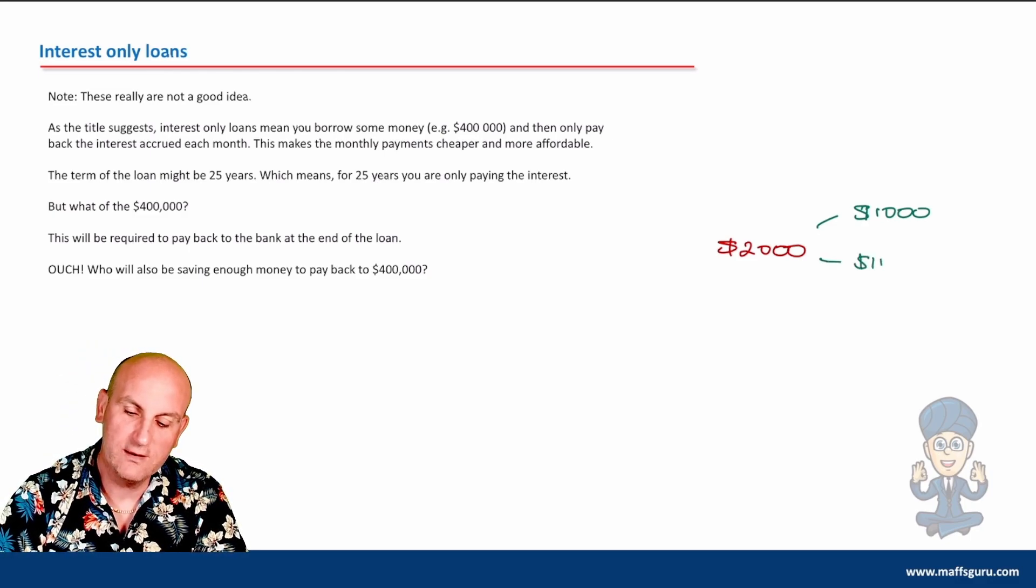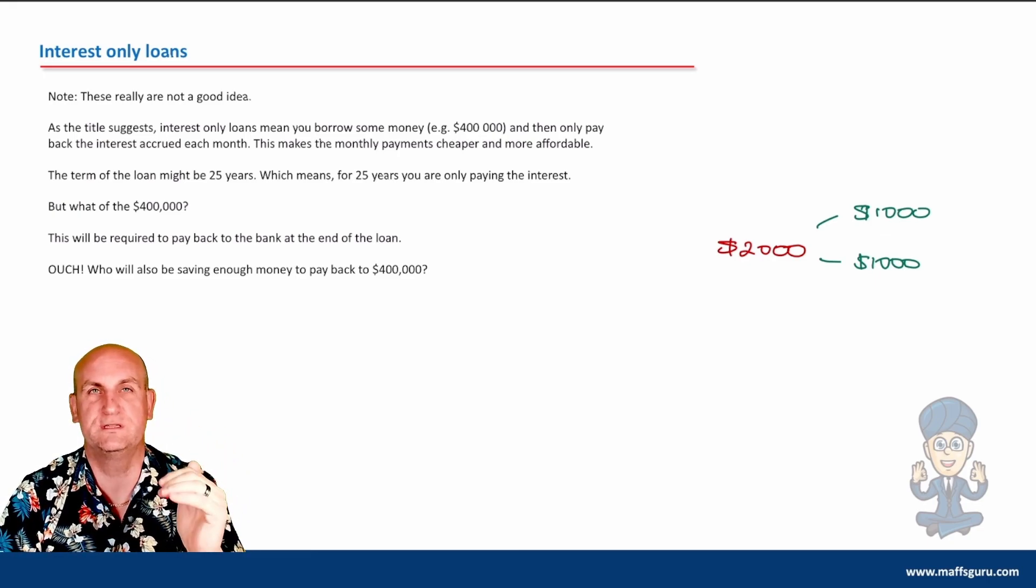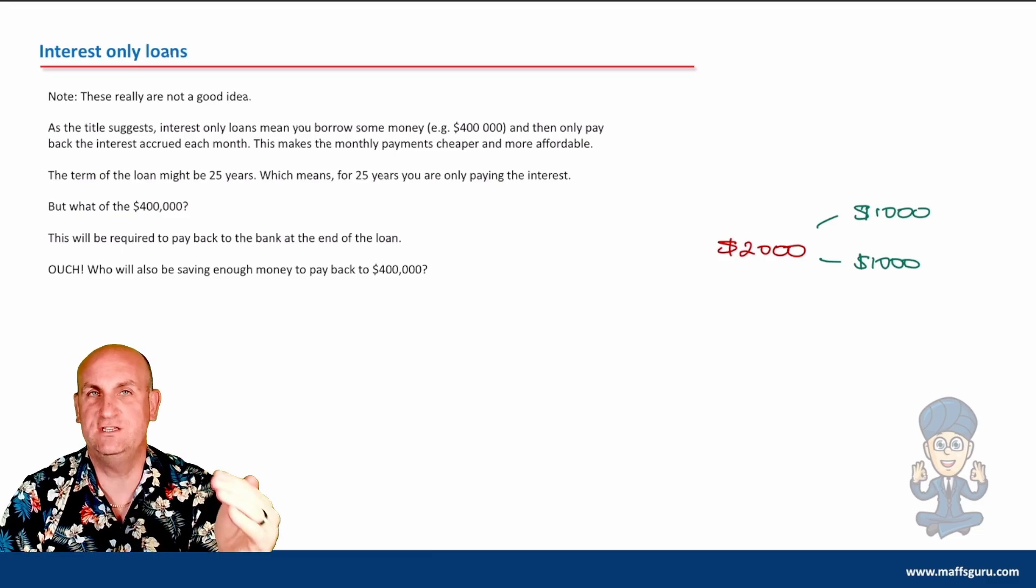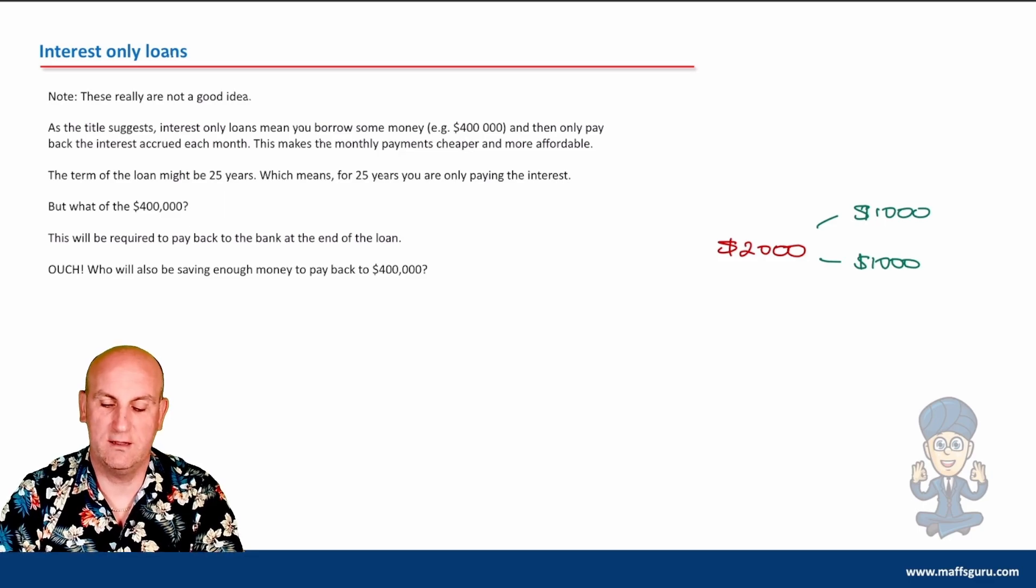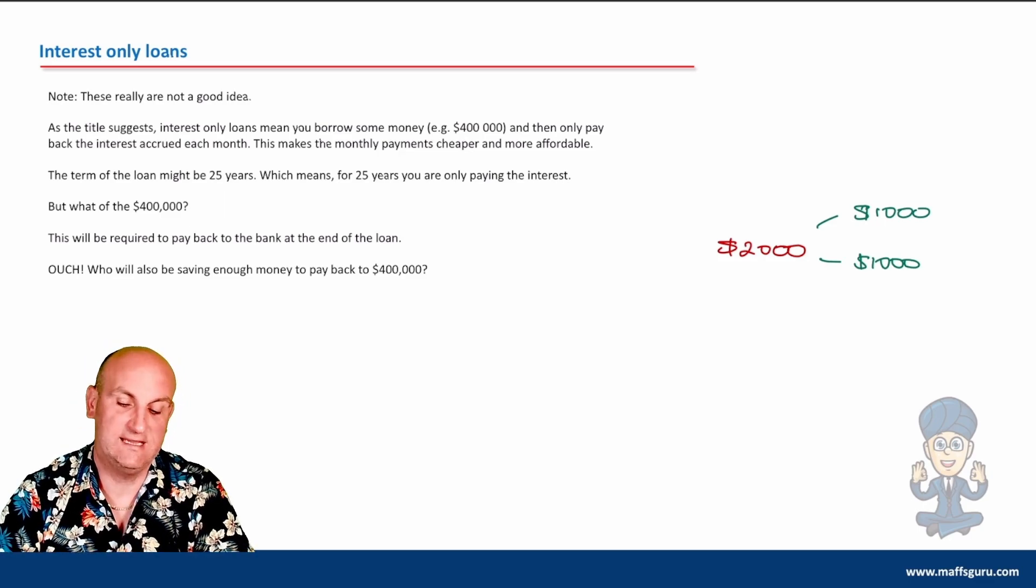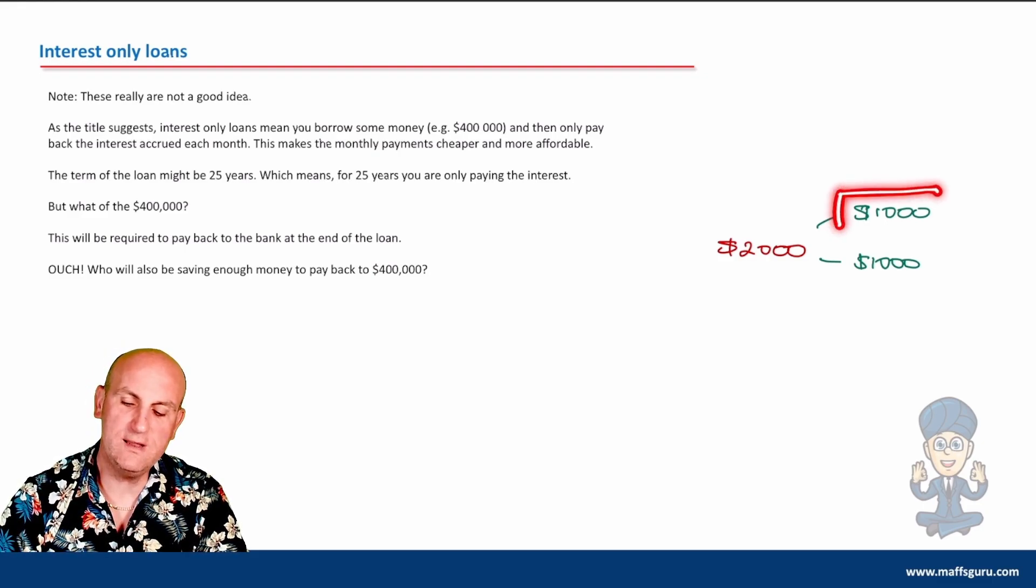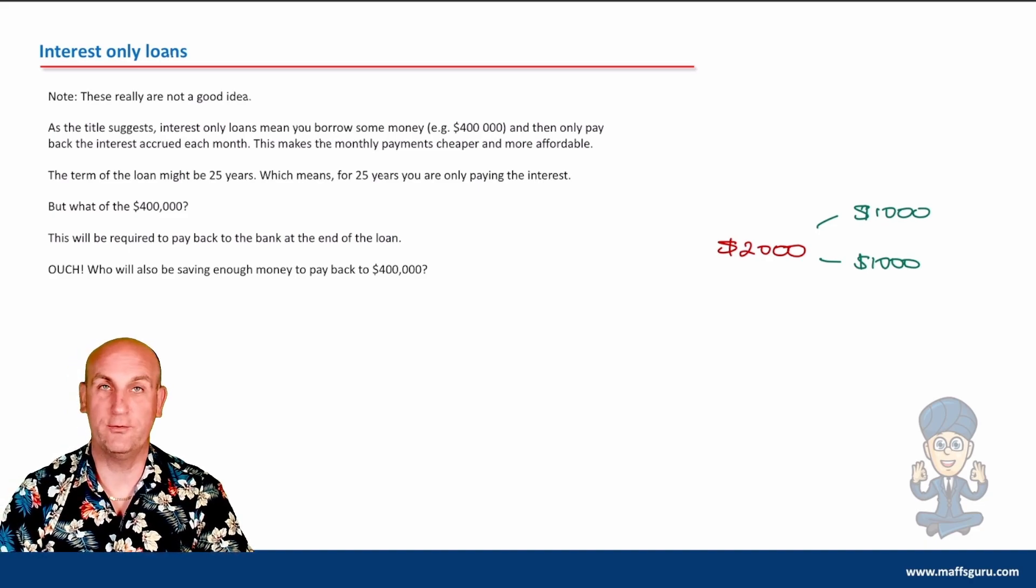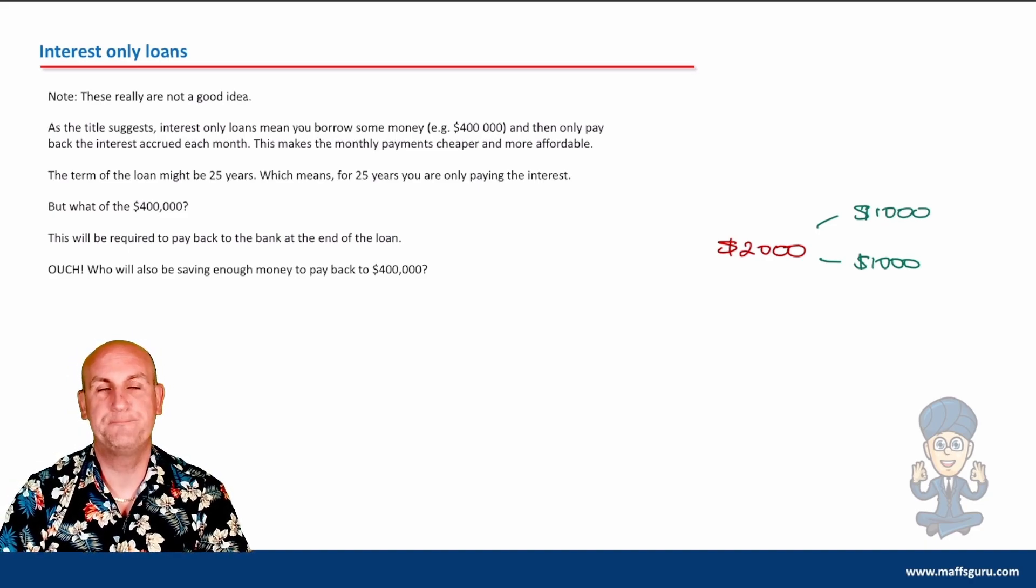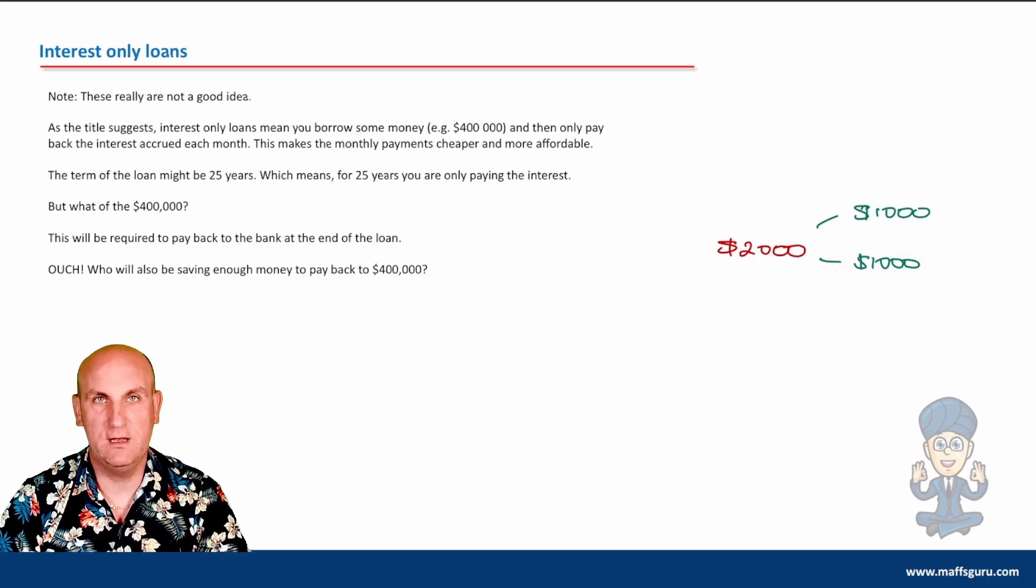When you take out a loan, you want to reduce the principal because as you're reducing it, you're paying less and less interest. But some smart aleck in the banking sector said we'll come up with an idea where you don't pay the principal, you only pay the interest. So you're only paying $1,000 a month instead of $2,000. Sounds good, doesn't it?